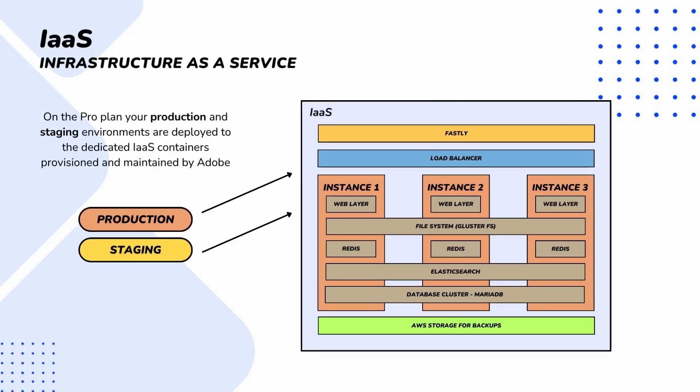With Adobe Commerce Cloud you get basically the same, but you don't need to worry about anything. On the pro plan, you get two provisioned environments — master and staging — that are Infrastructure as a Service, fully maintained by Adobe. On the pro plan your production and staging environments are deployed to dedicated Infrastructure as a Service containers provisioned and maintained by Adobe. This is important because, in comparison to Platform as a Service, you get dedicated containers so your resources are not shared with any other project in Adobe Commerce Cloud, whereas with Platform as a Service your resources are shared between other projects.